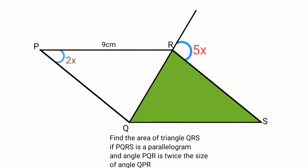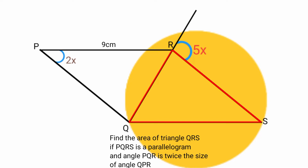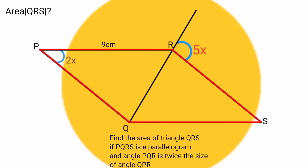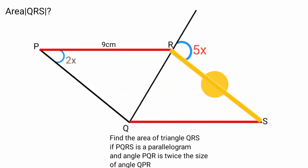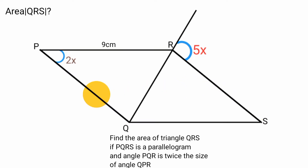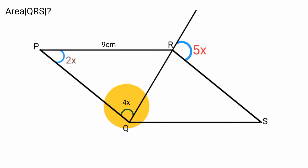Good day viewers, welcome to another interesting math solution video. Today's question says: find the area of triangle QRS if the quadrilateral PQRS is a parallelogram and angle PQR is twice the size of angle QPR. We are asked to find the area of triangle QRS. We can see that side PR is 9cm in length.